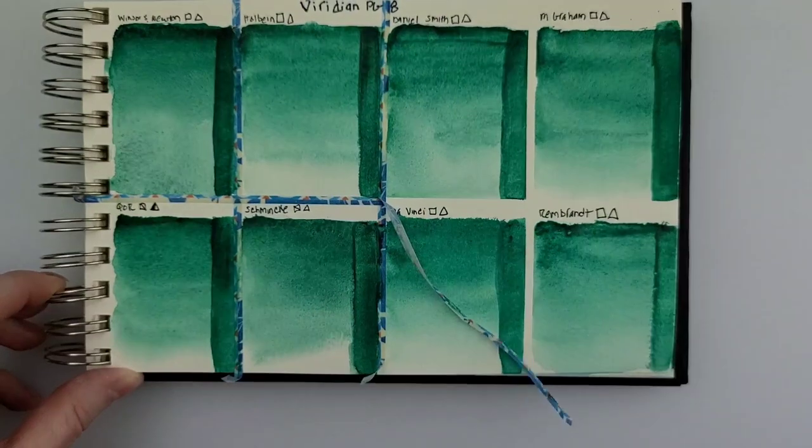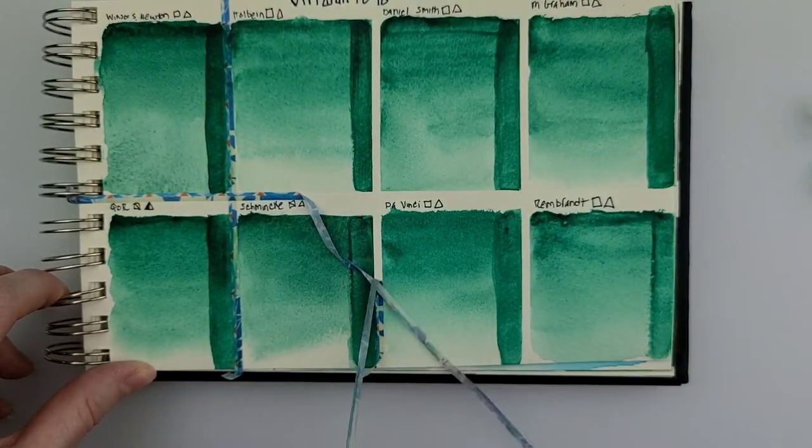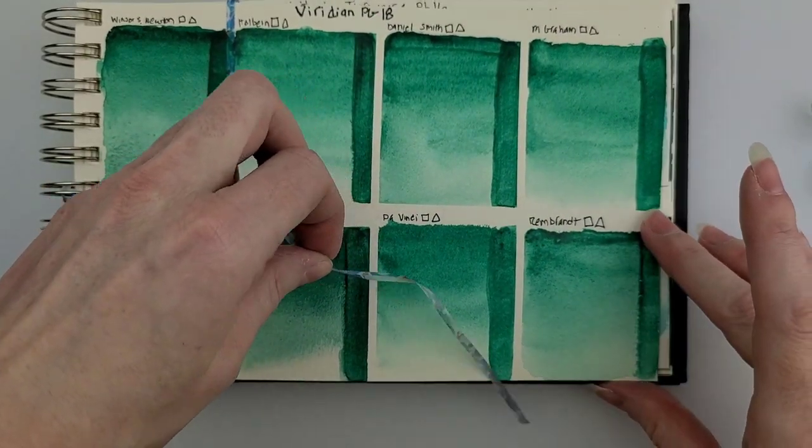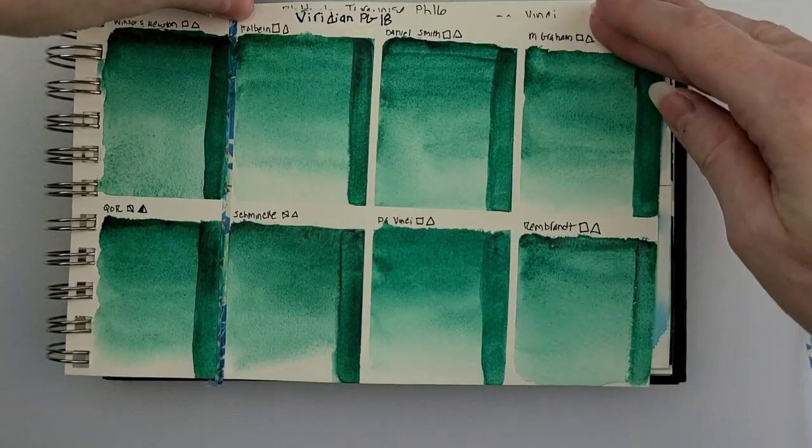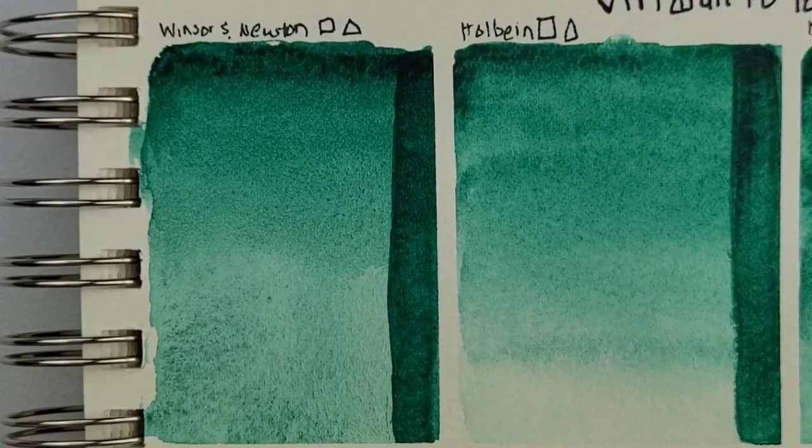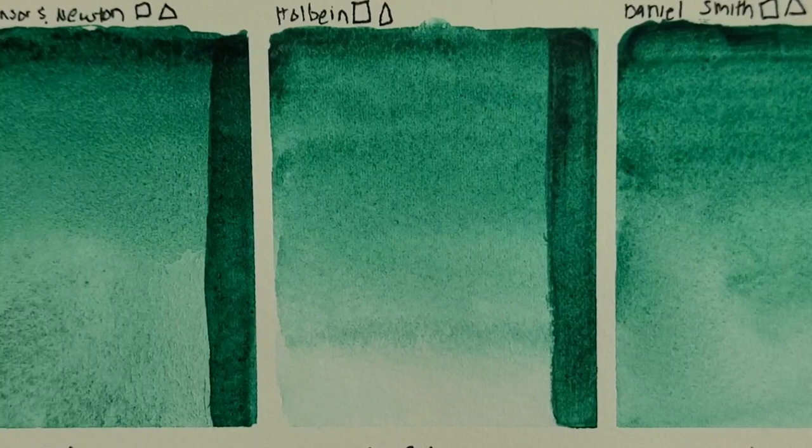And taking the tape off, my very favorite part. Okay, so now that you can kind of see all of them together, you see that they're very, very similar in color. There's Winsor & Newton with that granulation at the bottom.